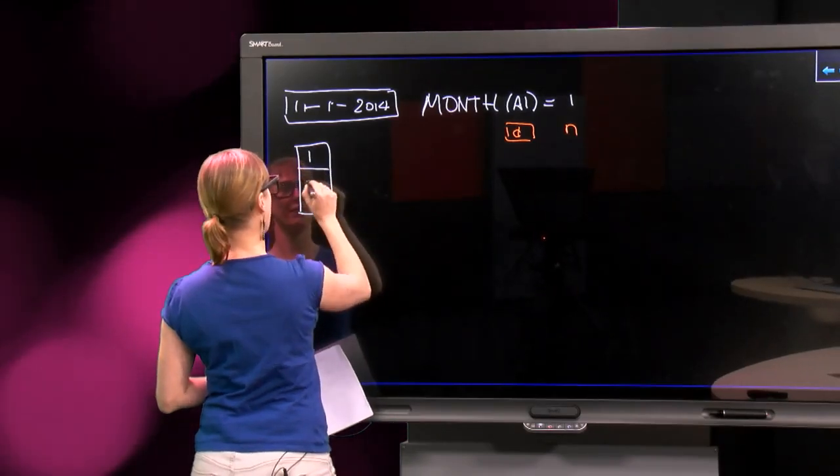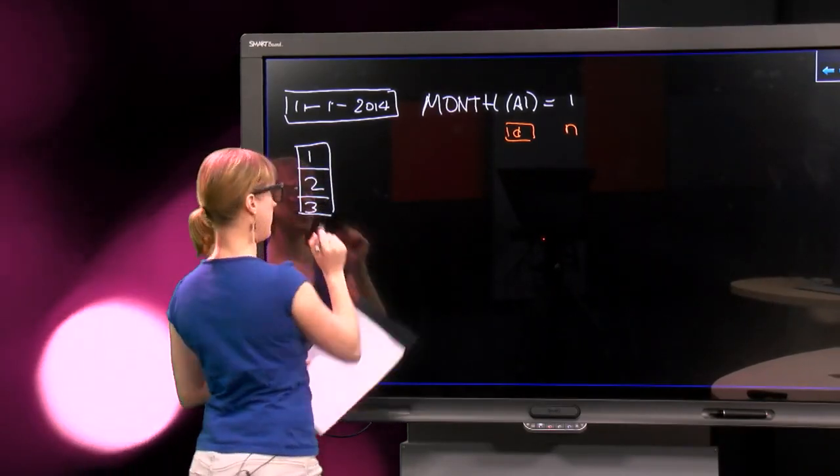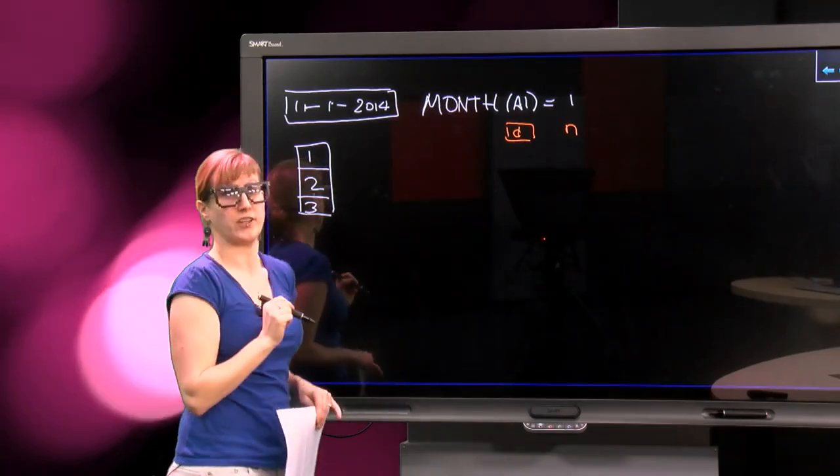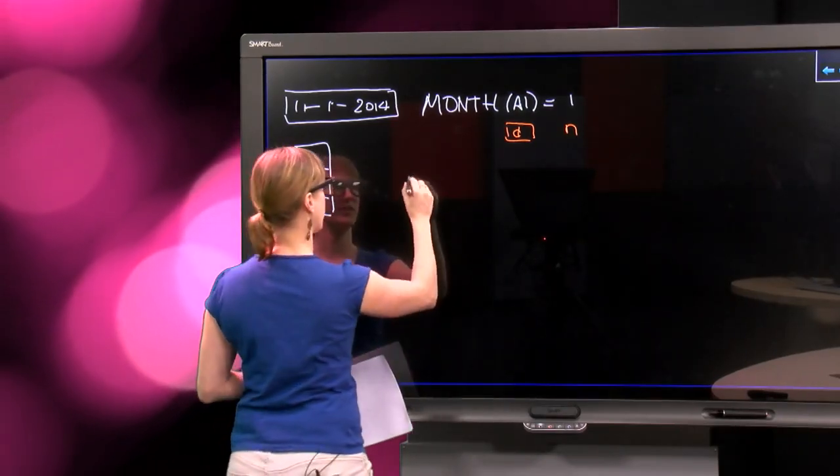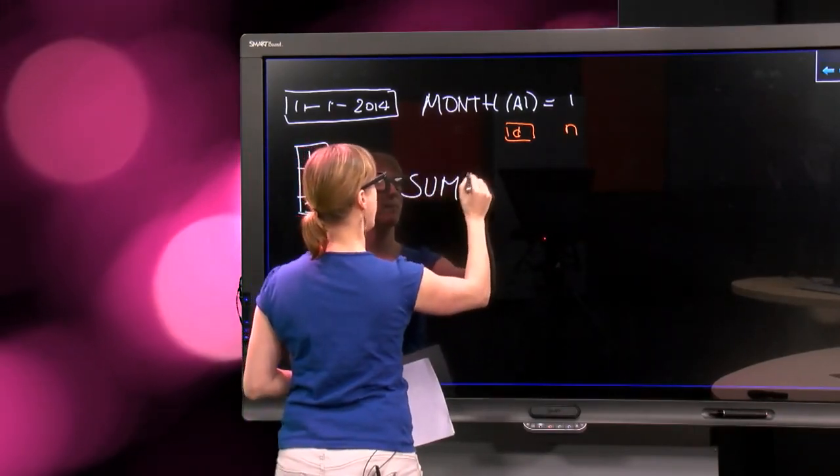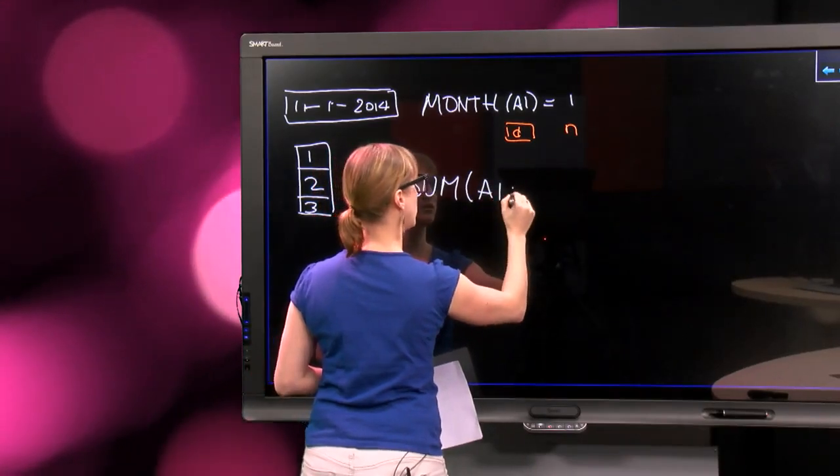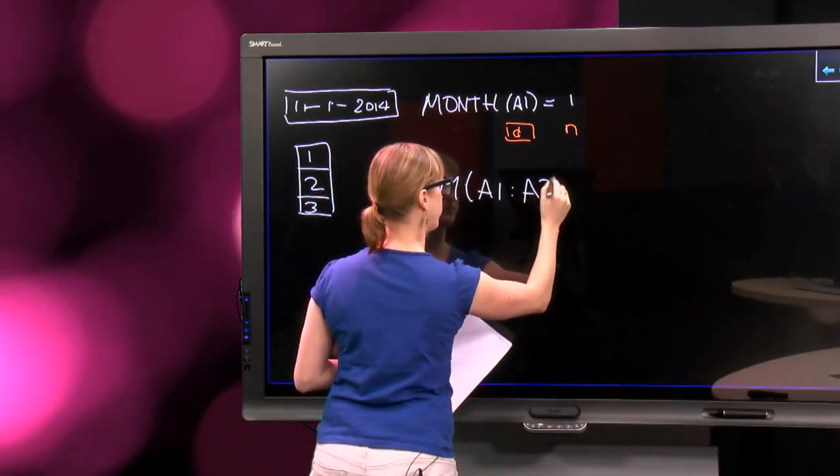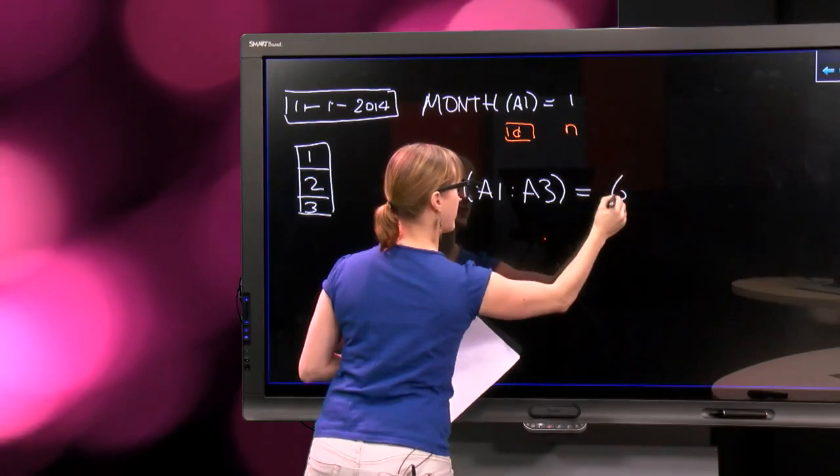Suppose we have a range, we have 1, 2, 3 in a spreadsheet. We can calculate on that, we know how to do that. So we can say something like the sum of A1 to A3, which is in this case 6.